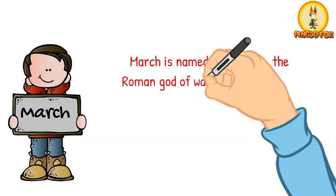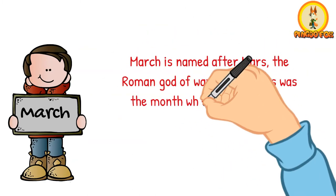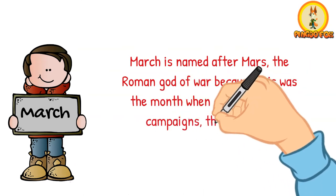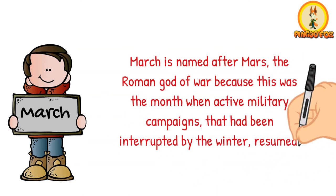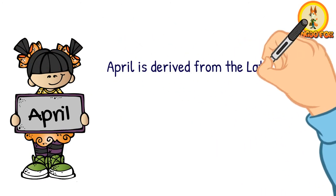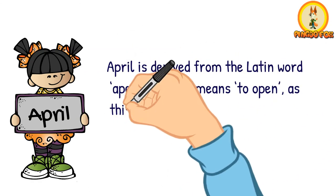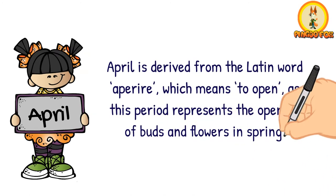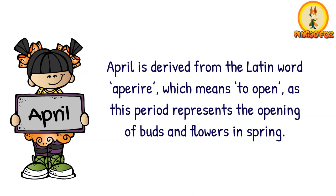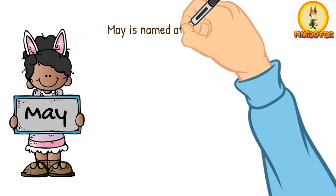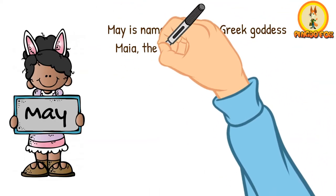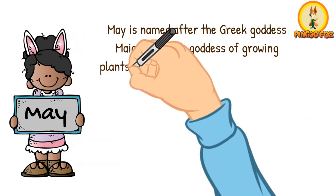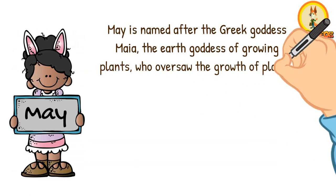March is named after Mars, the Roman god of war, because this was the month when active military campaigns that had been interrupted by the winter resumed. April is derived from the Latin word "aperire," which means to open, as this period represents the opening of buds and flowers in spring. May is named after the Greek goddess Maia, the earth goddess of growing plants, who oversaw the growth of plants.